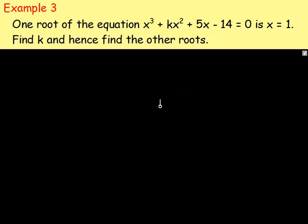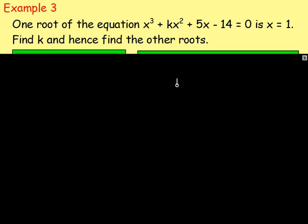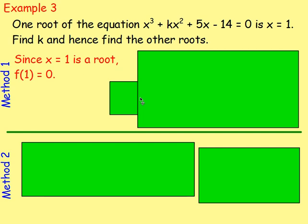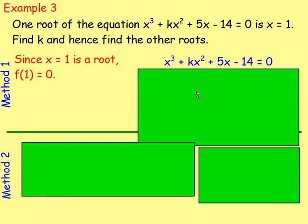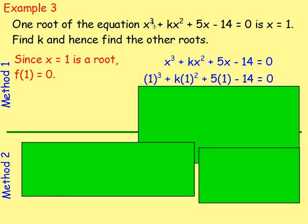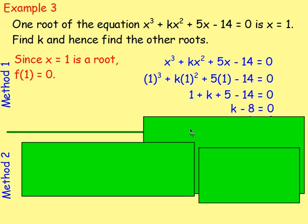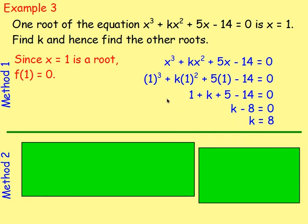Let's try one more example. Example number 3: one root of the equation x cubed plus kx squared plus 5x minus 14 equals 0 is x equals 1. In other words x equals 1 is one of the roots of that equation. Find k and hence find the other roots. There are two methods for doing this. The first method: if x equals 1 is a root, it means that if you sub in 1 in place of x you will get 0 out.